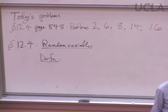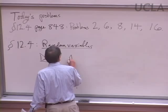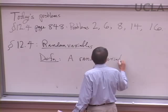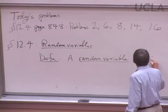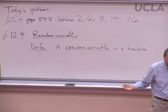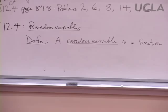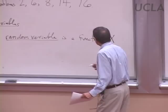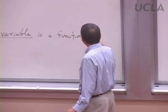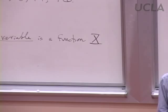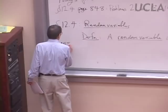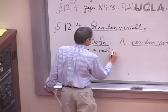So a definition. Say we have some experiment, and there's some sample space, some set of possible outcomes. A random variable is a function — we've been talking about functions since 18.03A — call it X, that's a capital X, assigning a real number to each outcome.